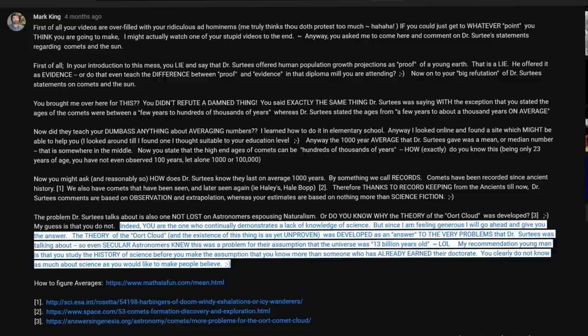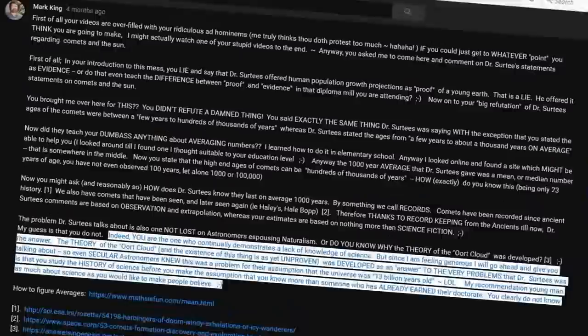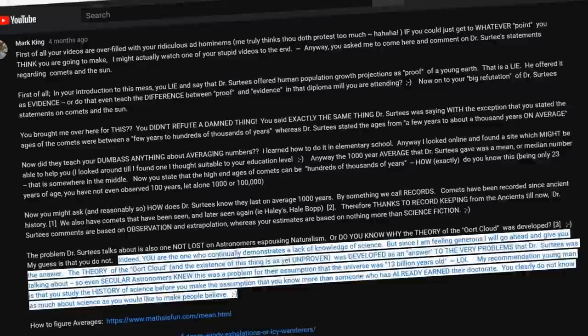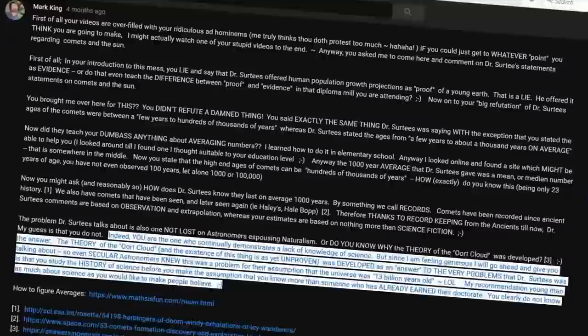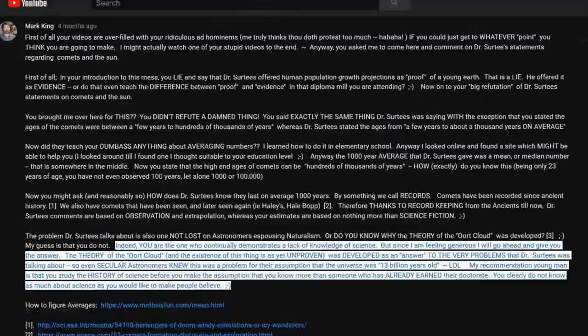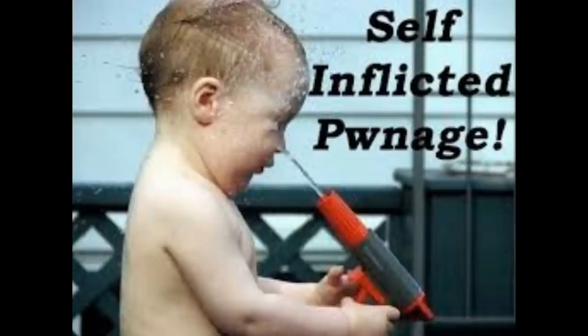Indeed, you are the one who continually demonstrates a lack of knowledge of science. But since I am feeling generous, I will go ahead and give you the answer. The theory of the Oort Cloud, and the existence of this thing is yet unproven, was developed as an answer to the very problems that Dr. Surtees was talking about. So even secular astronomers knew that this was a problem for their assumption that the universe was 13 billion years old. LOL! My recommendation, young man, is that you study the history of science before you make the assumption that you know more than someone who has already attained their doctorate. You clearly do not know as much about science as you would like to make people believe. Smiling winky face. Your own sources support everything I've said here, and in my original videos. The 1,000 or multi-thousand year average age comes from nothing.